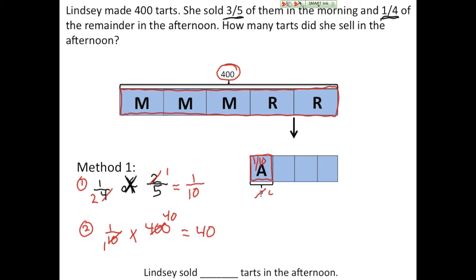I multiply my numerators and denominators and get 40. So Lindsay sold 40 tarts in the afternoon. I'm going to write my answer in my sentence and I'm all done.